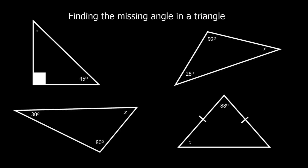Here are four questions — give them a go, pause the video, and then I'll put the answers up. For this one we've got 90 and 45, so 180 take away 135 is 45 degrees. You have to give a reason: angles in a triangle add up to 180 degrees. I'm not going to write that for every one because they've all got the same reason, apart from one which has an extra reason.